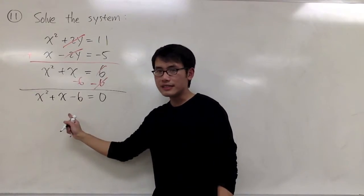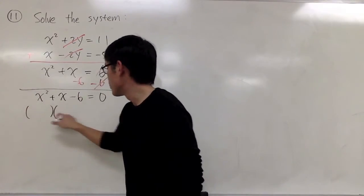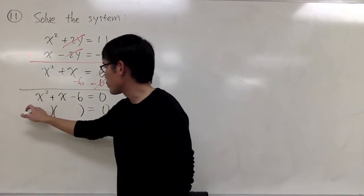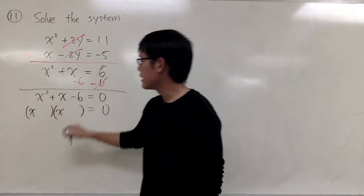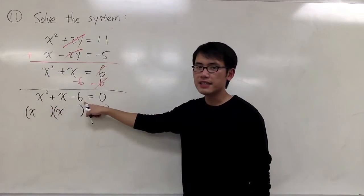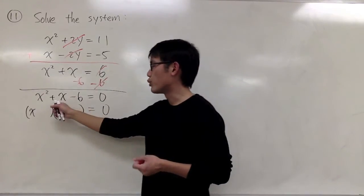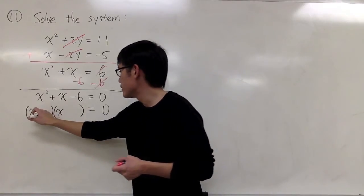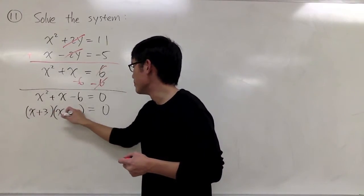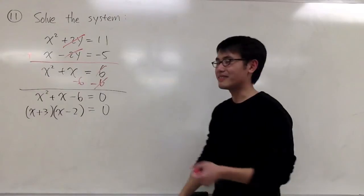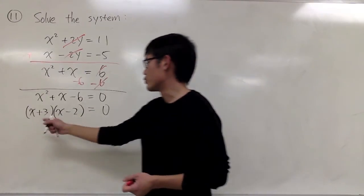And we can factor this out. Two parentheses equals to 0. To get x², let's have x and x. And I want to get negative 6. But when I add these two numbers together, I want to produce a positive 1. So let's try, let's have positive 3 and minus 2 works. That's a correct combination.